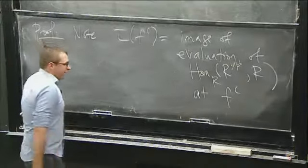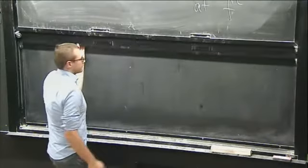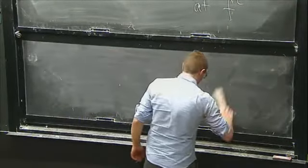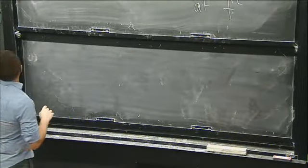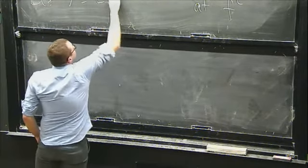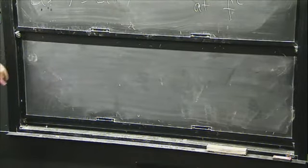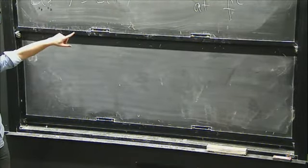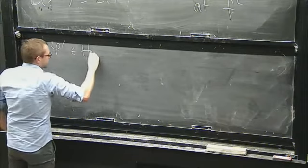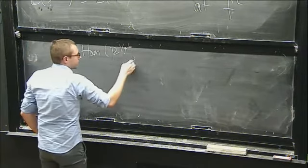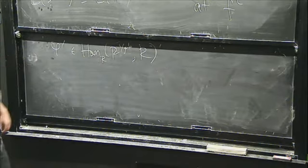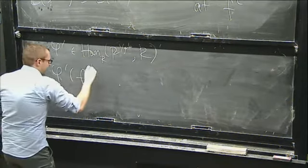This is a nice perspective because it makes very clear that whatever choice of coordinates you did, it doesn't matter — this gives you the same ideal. All right, so once I have this, the statement just pops out. So let's say I want to evaluate something — I want to pick something inside of here; this comes up as a homomorphism at f^{c'}.